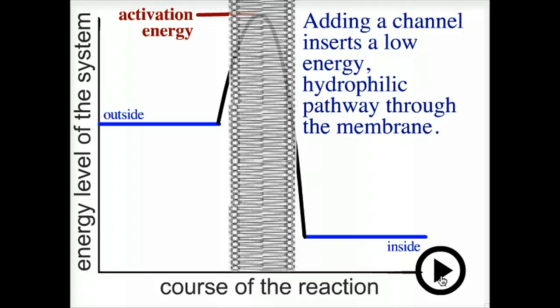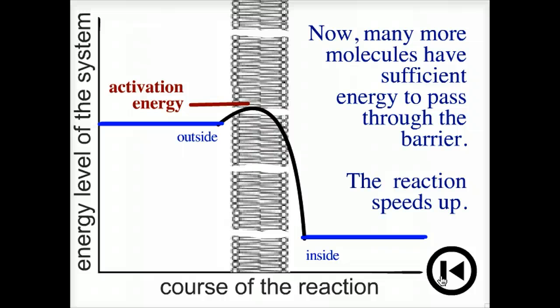Adding a channel inserts a low-energy hydrophilic pathway through the membrane. The activation is reduced. Now many more molecules have sufficient energy to pass through the barrier. The reaction speeds up.